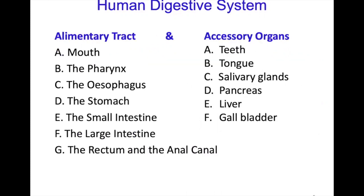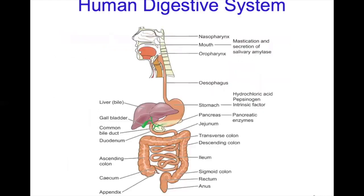The organs in the alimentary tract are the mouth, pharynx, esophagus, stomach, small intestine, large intestine, rectum and the anal canal. Accessory organs include the teeth, tongue, salivary glands, pancreas, liver, and gallbladder.